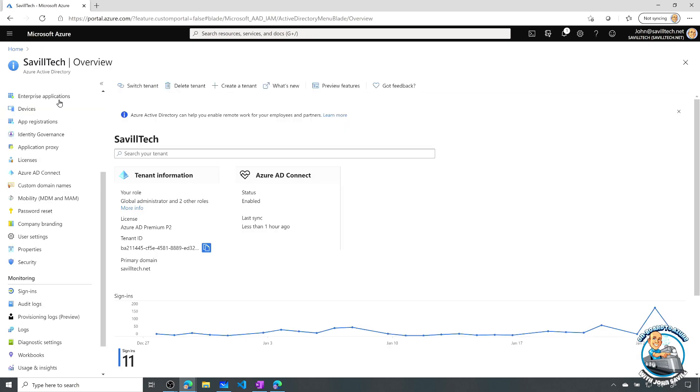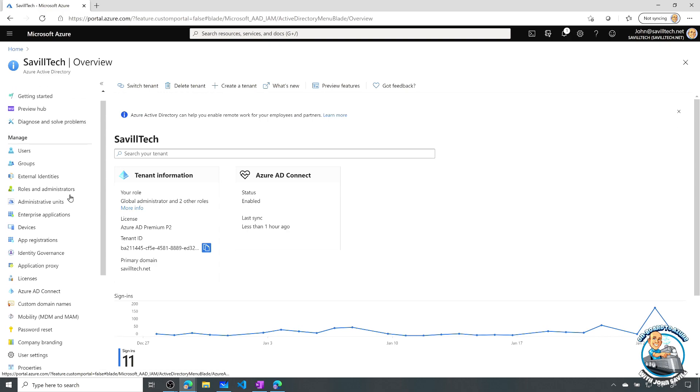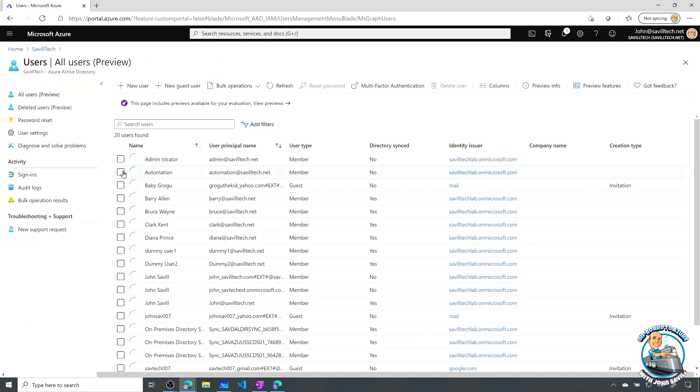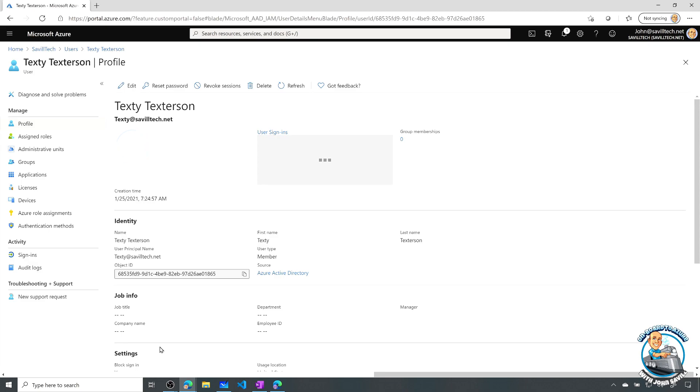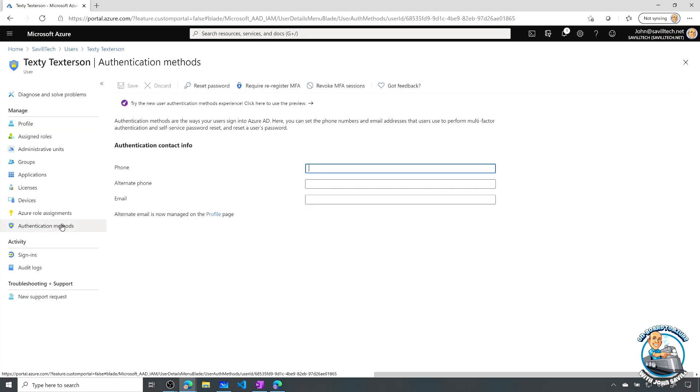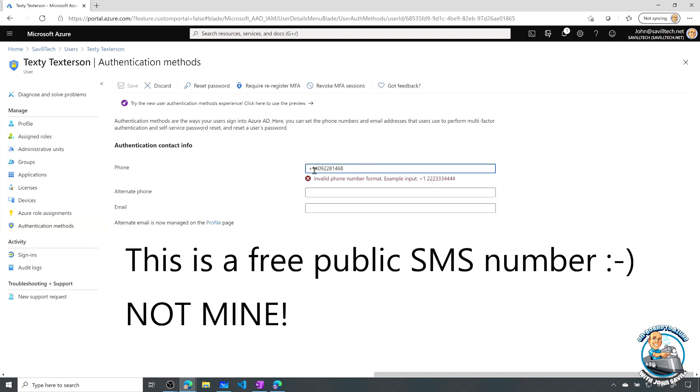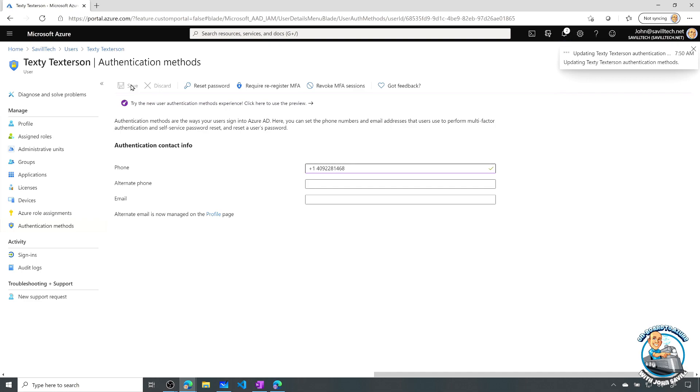Now once you've enabled it for the user, obviously you need to set them up with an authentication method of the phone. Now I could do this at the regular Azure AD portal. I can go in, and for Texty Texterson which we can see here, we have this authentication methods. And from here I could select it. And what I need to do is I'll actually populate this with the phone number. Now this needs to include the country code. So I'm going to take this and paste it in. It wants a space in the configuration. And then I would hit save. So I've configured that now with a phone number.